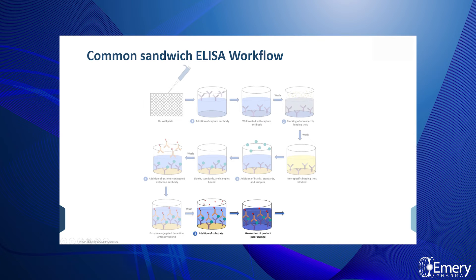This antibody will bind to the available target antigens present. Next, following the incubation and wash, an imaging substrate is added to the plate and incubated. During this step, the enzyme bound to the detection antibody converts the substrate to a colored product, creating a detectable signal.